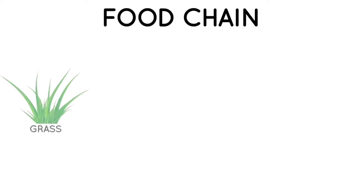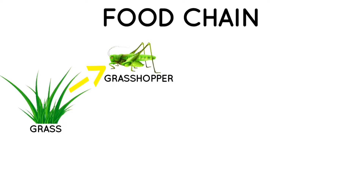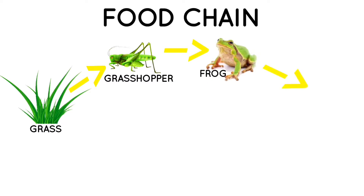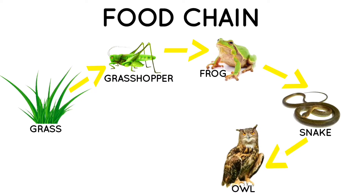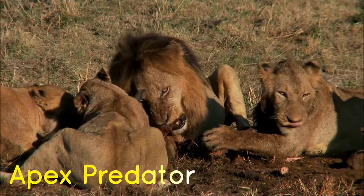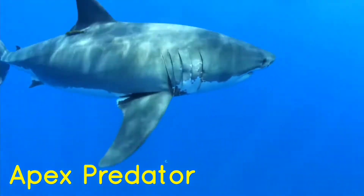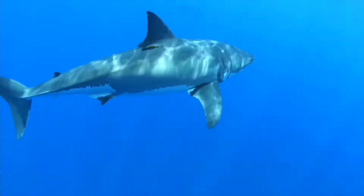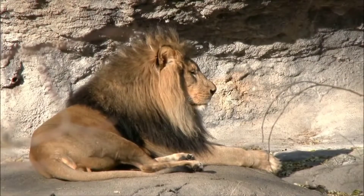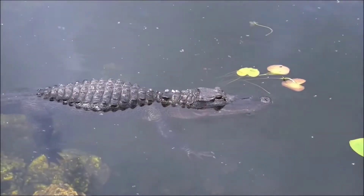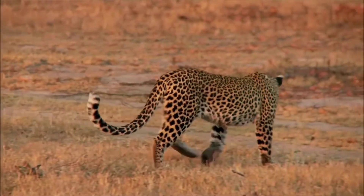This longer chain also begins with grass. The grasshopper eats the grass and then gets eaten by a secondary consumer, a frog. Then the frog gets eaten by a tertiary, or third level consumer, a snake. The snake is eaten in turn by an owl. The owl is the apex predator in this food chain. Apex predators are not hunted and eaten by any animals — we can say that they are at the top of the food chain. You probably recognize a lot of apex predators like lions, sharks, eagles, and crocodiles.